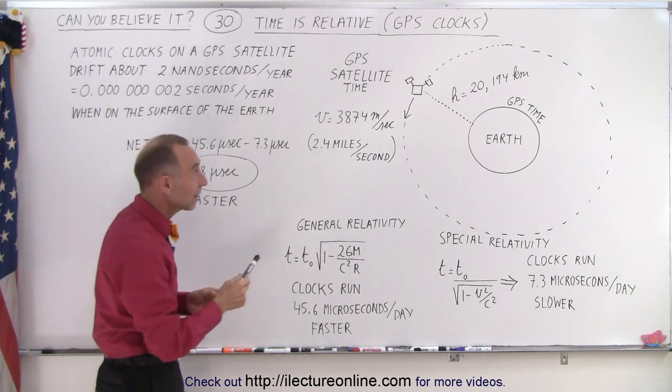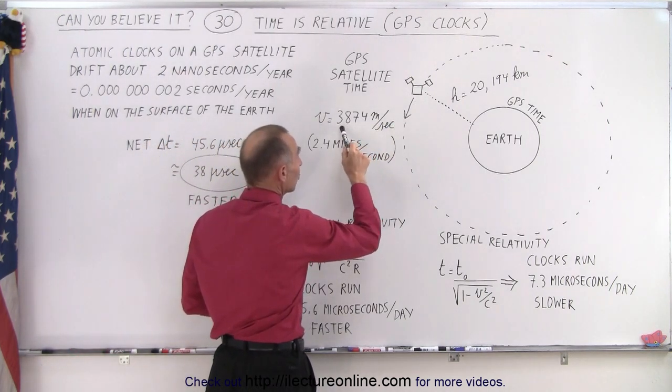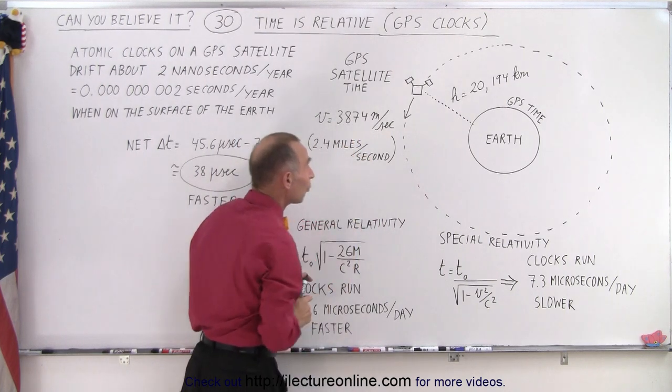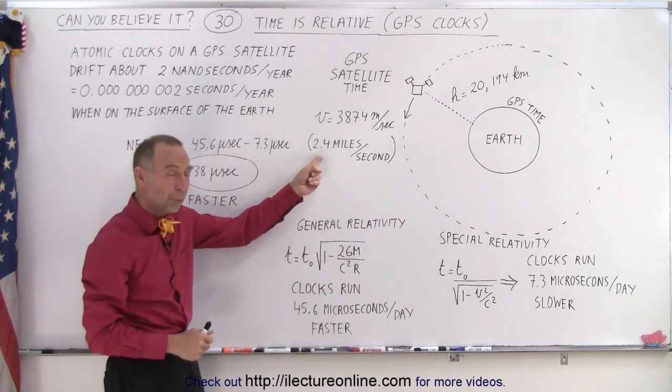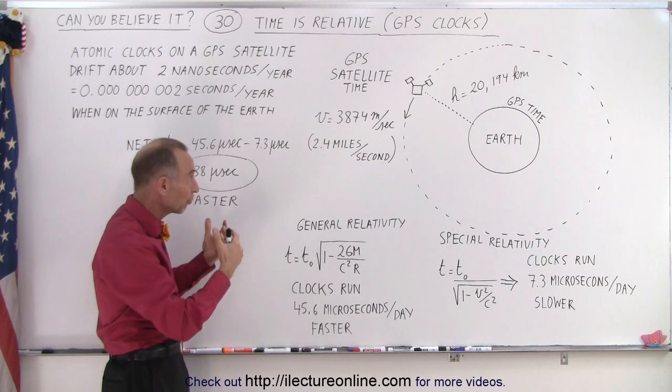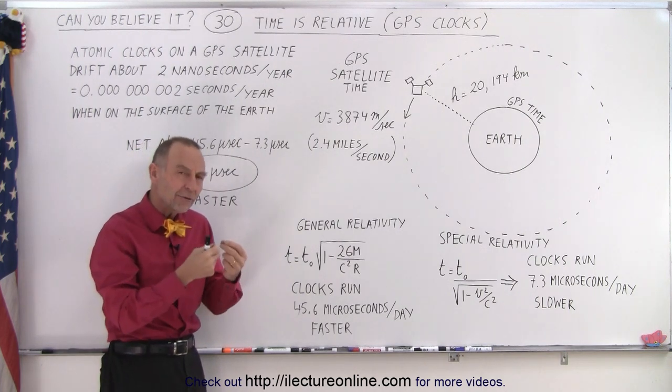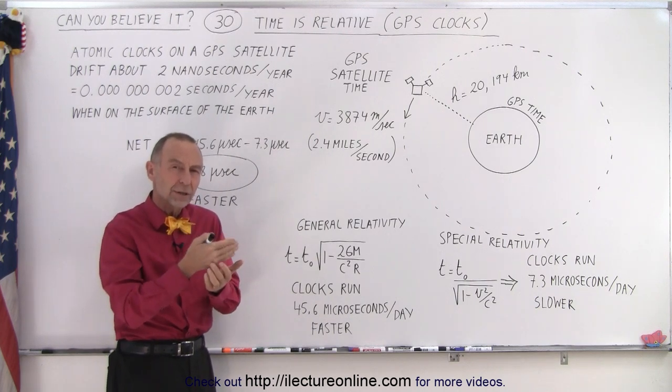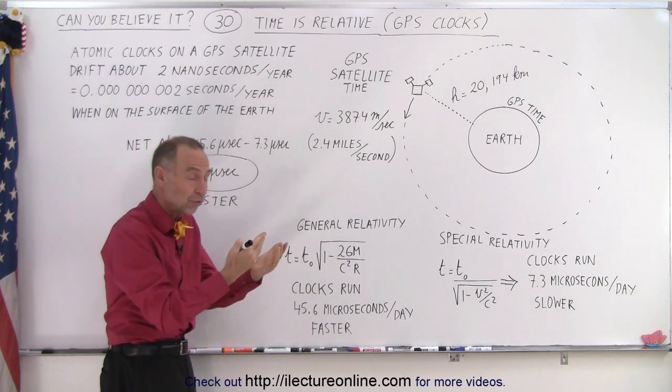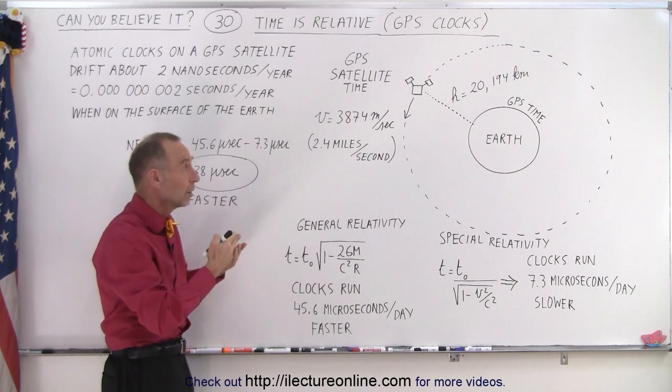But they don't. Because a satellite travels at 3,874 meters per second, which is about 2.4 miles per second, or almost 4 kilometers per second, which is really fast. So they're beginning to feel the effect of the general theory of relativity. The faster you travel, the slower time runs.